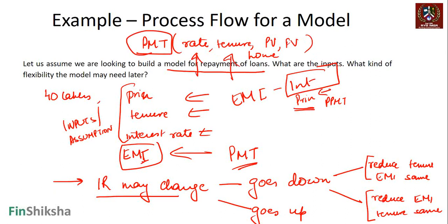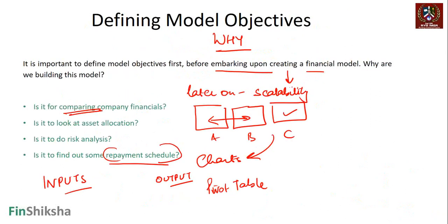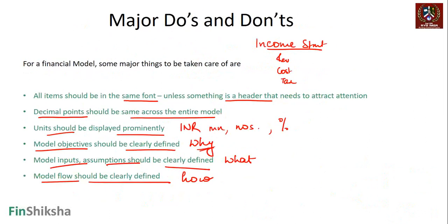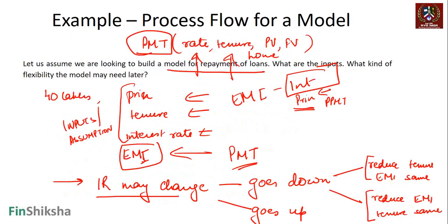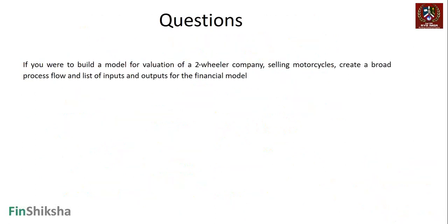So in terms of any financial model, it is a good idea to keep in mind what could be future extensions for this model. And that's where we go back to our initial discussion: we have to define what is the objective - why are we doing it? What are the key inputs, which will come from what are the drivers of that particular input or business model? And then how are we going to build the model? That's basically what we are trying to do whenever we are going to look at any kind of financial model.